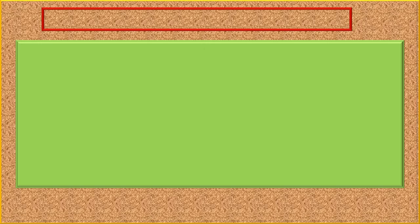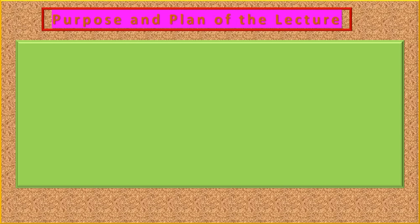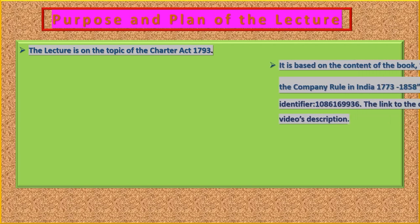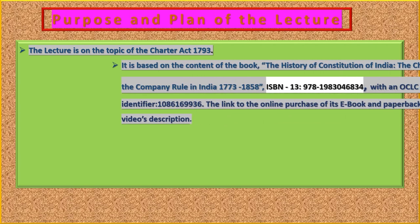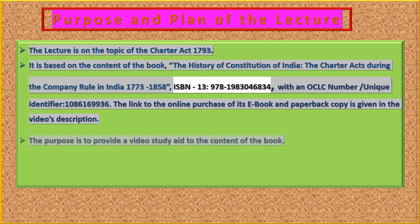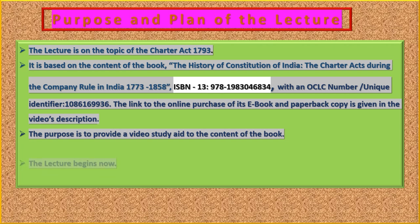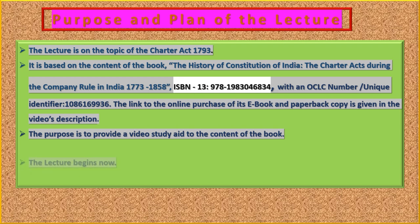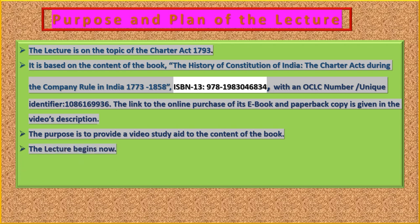The purpose and plan of the lecture is as follows. The lecture is on the topic of the Charter Act 1793, based on the content of the book The History of Constitution of India: The Charter Acts during the Company Rule in India 1773–1858, ISBN 13-978-1983046834, with OCLC number 1086169936. The link to the online purchase of its e-book and paperback copy is given in the video's description. The purpose is to provide a video study aid to the content of the book.